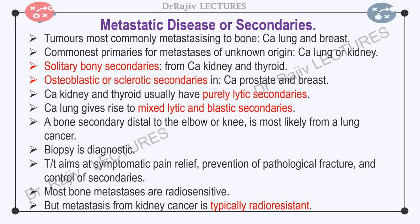Radiograph of the entire involved bone and chest, a bone scan, and CT scan of the chest, abdomen, and pelvis are obtained. After the workup is complete, a guided biopsy can be performed. The microscopic appearance of metastatic lesion usually is similar to that of the primary lesion. Treatment consists of symptomatic pain relief, prevention of pathological fracture, and control of secondaries by chemotherapy or immunotherapy, localized radiotherapy, and bisphosphonates. Most bone metastases are radiosensitive, but metastasis from kidney cancer is typically radio-resistant. Role of surgery is limited to the management of pathological fractures.